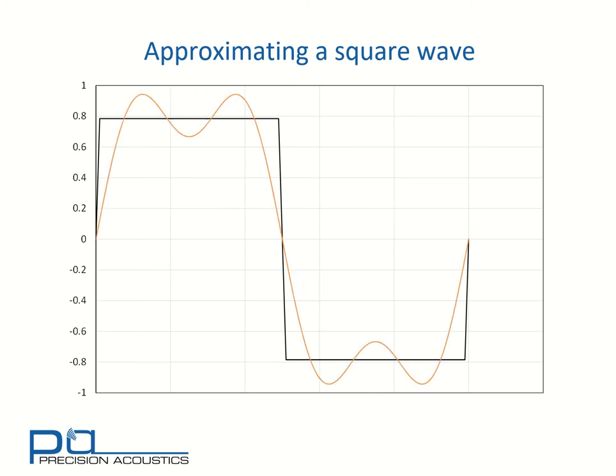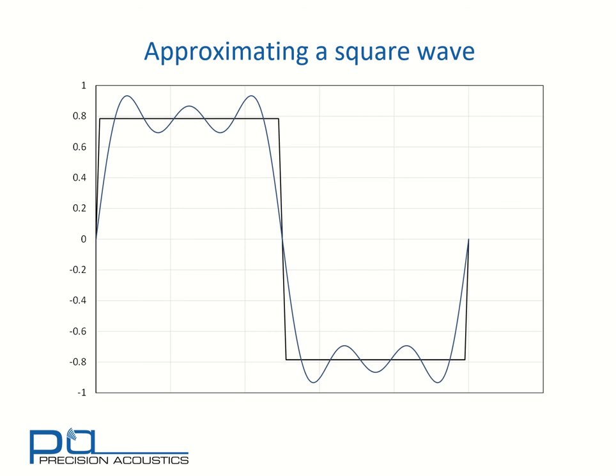When we add those two together we get a slightly better approximation. Once again, we can see there are certain regions where we could do with adding a little bit more signal, and some parts of the waveform where we could do with subtracting some off. If we look at a sinusoid with five times the original frequency, we can see that accomplishes just those requirements. But again, because the corrections needed are a little less, we can use an amplitude that's smaller — five times the frequency and one fifth of the amplitude of the original. If we add that to our previous approximation, we get a better approximation again.